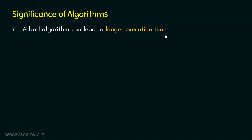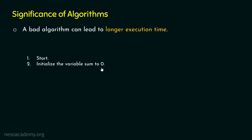Let's take a simple example of calculating the sum of first 10 to the power of 12 natural numbers. Step one: start the algorithm. Step two: initialize the variable sum to zero. We need variable sum and we are initializing it to zero. After the completion of the algorithm, we will get the sum of first 10 to the power of 12 natural numbers.